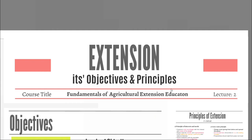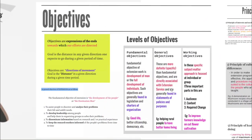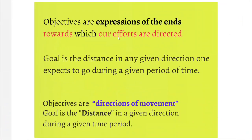Let's start with the objectives of an extension. Objectives are the expression of the ends towards which our efforts are directed. It is different from the goal. Goal is the distance in any given direction one expects to go in a given period of time. Objectives consider the direction of movement, whereas goal is the distance in a given direction during a given time period.